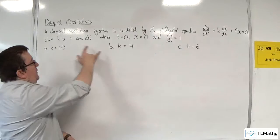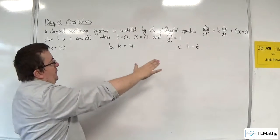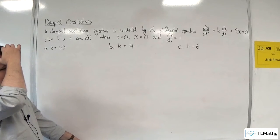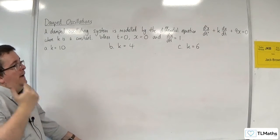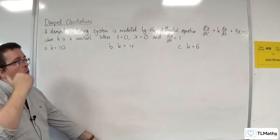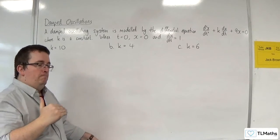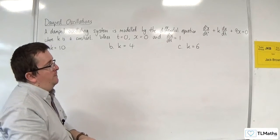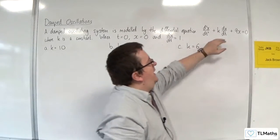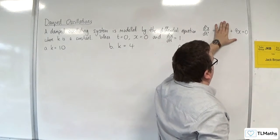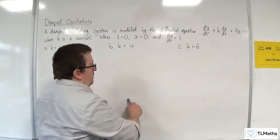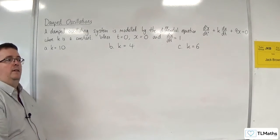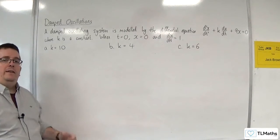We're going to look at three situations: k equals 10, 4, and 6. From that, we're going to get our particular solutions, and then we're going to look at what those solutions look like graphically. We want to see what that extra term is doing, because without it we have simple harmonic motion — motion that should look like a sine curve, albeit stretched vertically, horizontally, and translated horizontally.